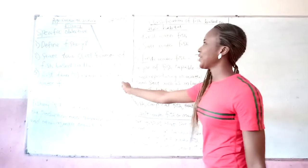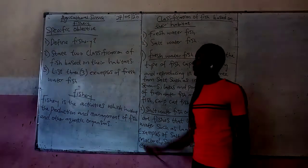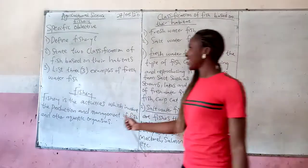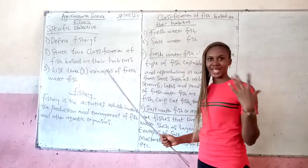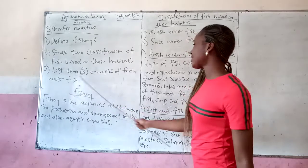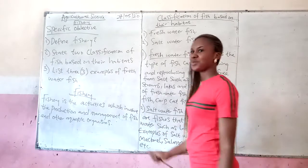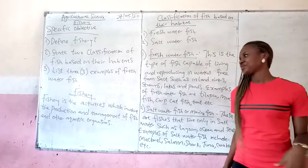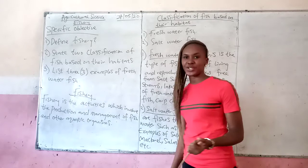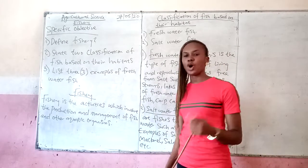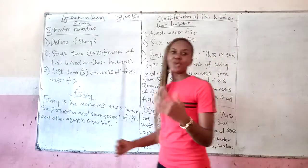Today our topic is Fishery. By the end of this lesson, I expect that each and every one of us should be able to define Fishery. Step 2: Classification of fish based on their habitats — that is, their dwelling place. Now the lesson proper. Fishery is the activities which involve the production and management of fish and other aquatic animals or organisms. Fishery can also be said to be the branch of farming involving raising of fish.